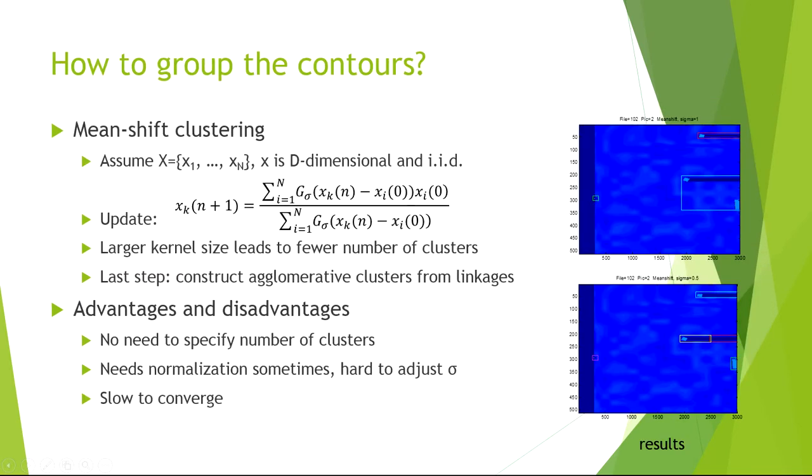It is non-trivial to map all the contours to their corresponding objects. One approach that is easy to think about is clustering. This is the formula for Gaussian mean shift. We notice that if xi0 is replaced by xi n-1, then it becomes Gaussian blurring mean shift.